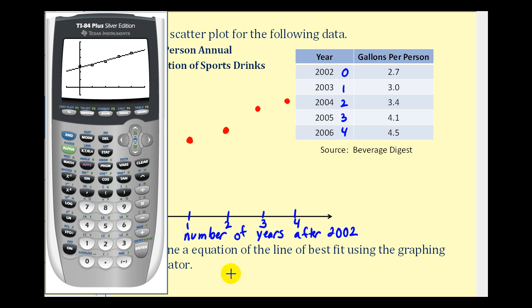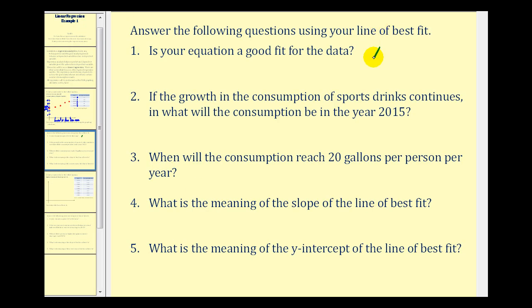Let's go ahead and answer some questions now. Remember our equation was y equals point four seven x plus two point six. Number one, is the equation a good fit for the data? And the answer is yes, because our correlation coefficient or r is approximately equal to point nine nine, which is very close to one. And the coefficient of determination or r squared is equal to point nine eight, which is very close to positive one.